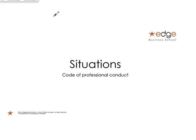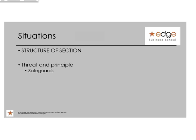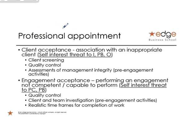Now we get to situations — this is Part B of the code. There's a gray slide showing the structure: the main bullet point gives the threat and principle, sub-bullet points give the explanation and safeguards, and the heading of the slide is the situation. This literally goes through the code. The first one is professional appointment — that's what you're going to flag, and then the keywords you're going to highlight.